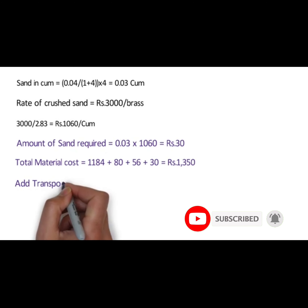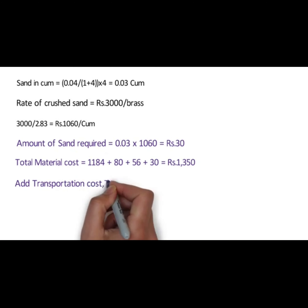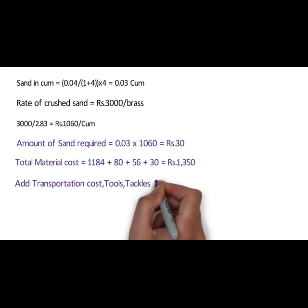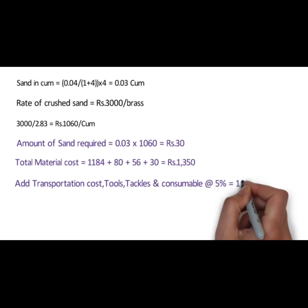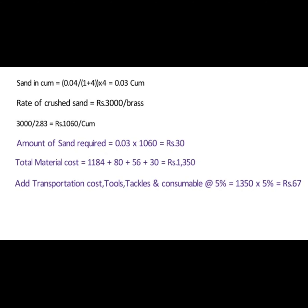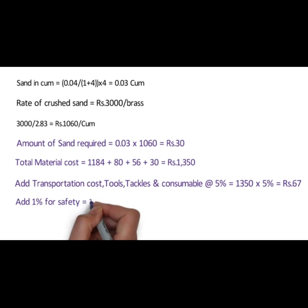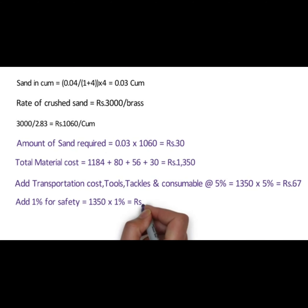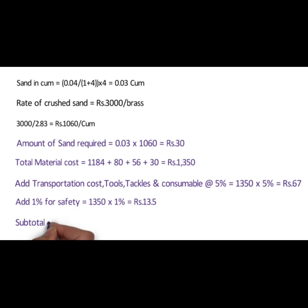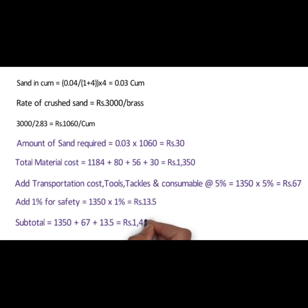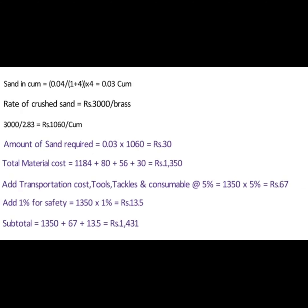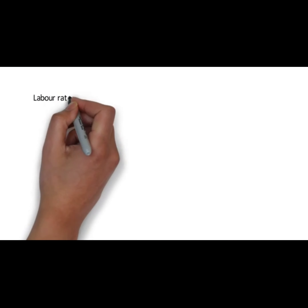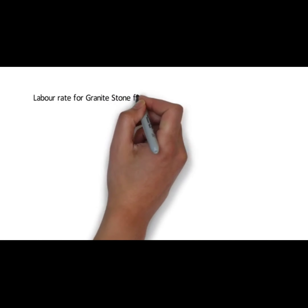Add transportation cost, tools, tackles, and consumables at 5%, that is 1350 into 5% equals 67 rupees. Add 1% for safety: 1350 into 1% equals 13.5 rupees. The subtotal is 1350 plus 67 plus 13.5 equals 1431 rupees.